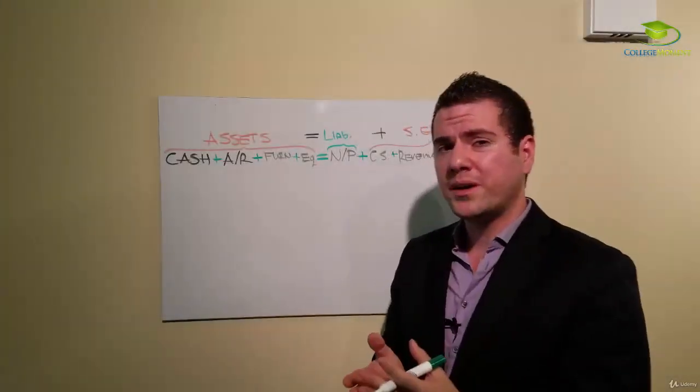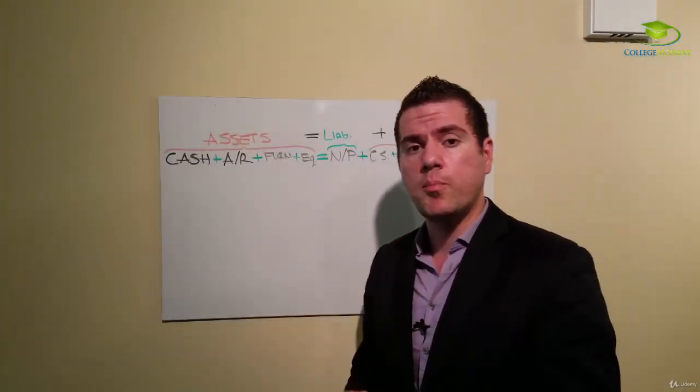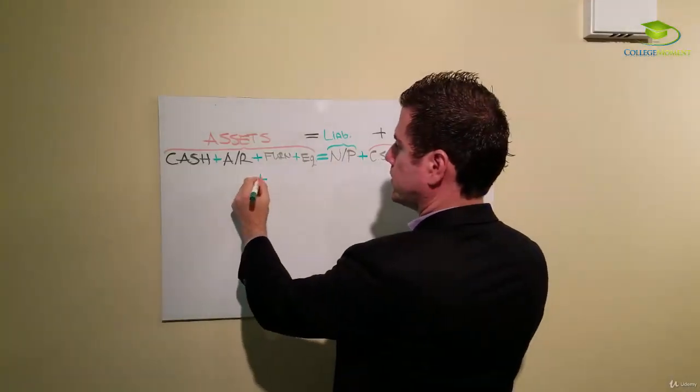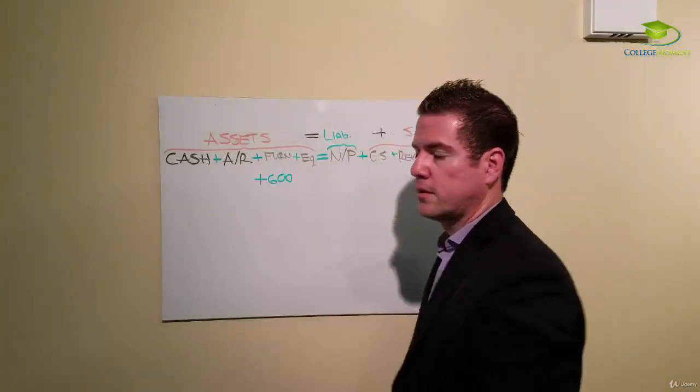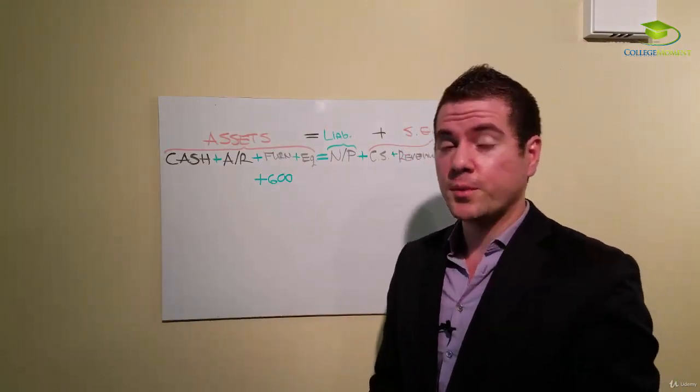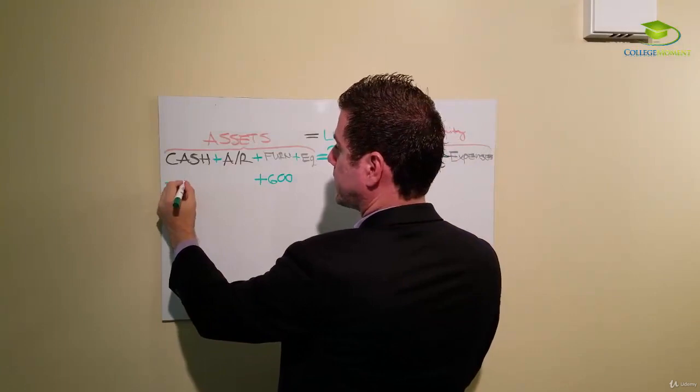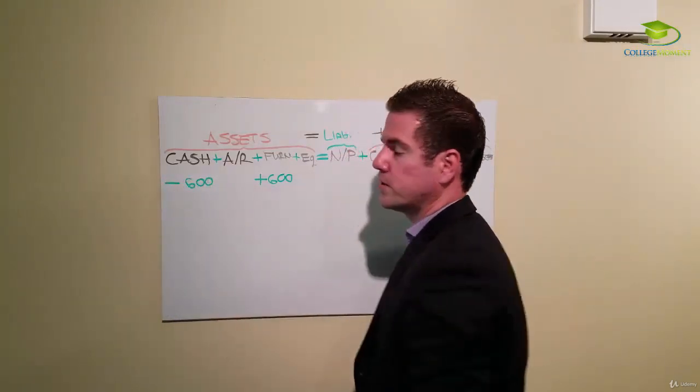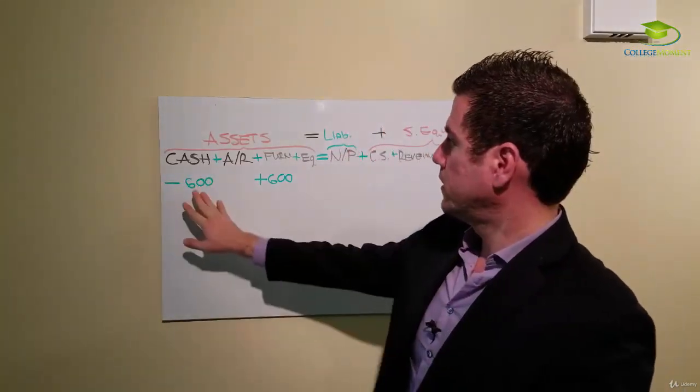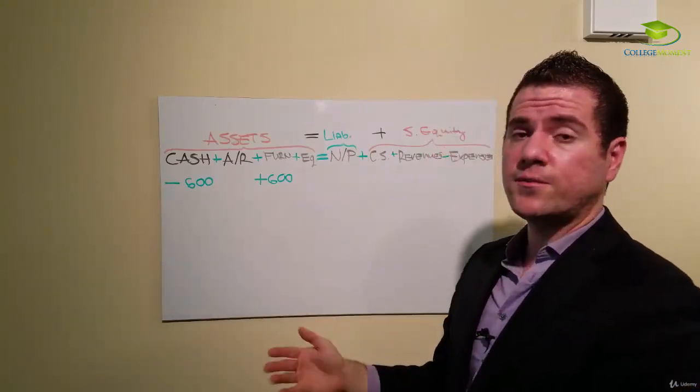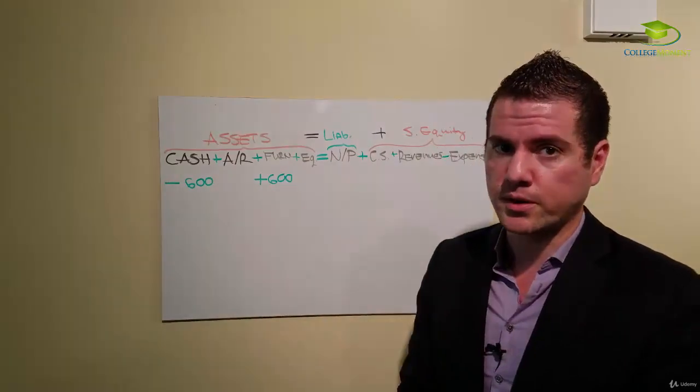Now the company in the second transaction actually bought furniture worth six hundred dollars. So that means we got furniture six hundred. How did we get the furniture? We paid cash. Therefore cash decreased six hundred dollars. On the left side of the equation we decrease 600 and we added 600, therefore the equation still balances. The most important part.